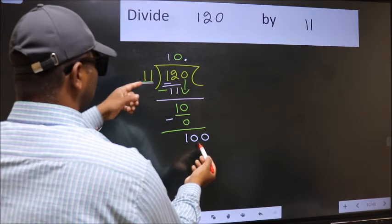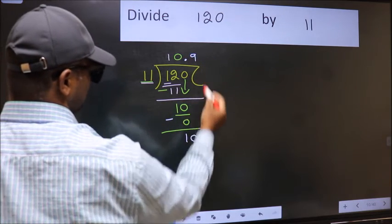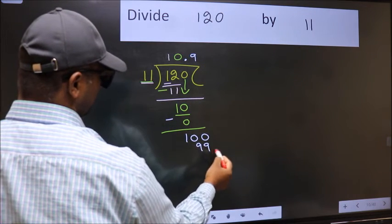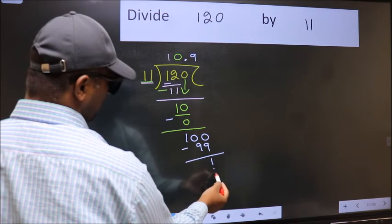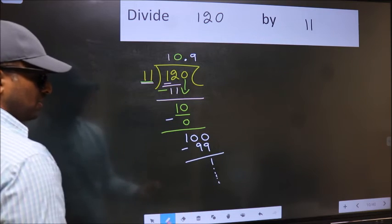A number close to 100 in 11 table is 11 nines 99. So you should subtract. We get 1. And you continue the division. I am not doing that.